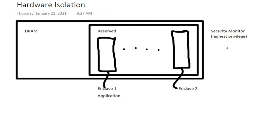In order to establish isolated enclaves, a security monitor or microcode — in Intel SGX at the highest privilege level, higher than that of the operating system — maintains the life cycles of enclaves. The DRAM is partitioned into a non-reserved area that can be accessed by all processes including the operating system, and also a reserved area which is itself partitioned among enclaves. The area for enclave 1 can only be accessed by enclave 1 and no other enclave or operating system.